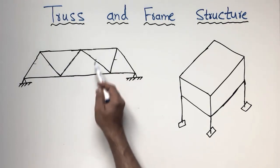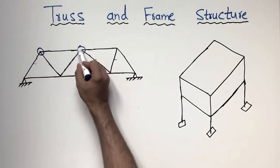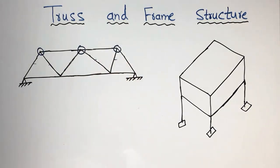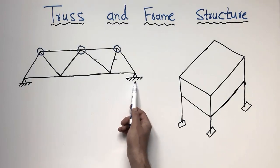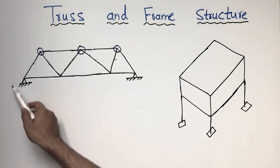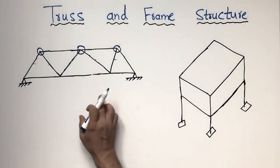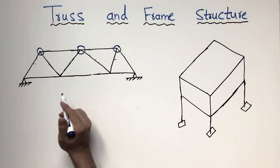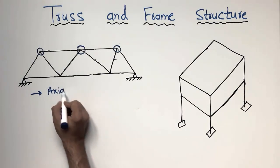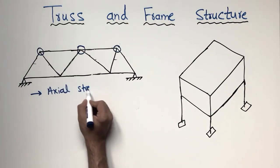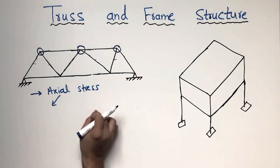These truss members are always connected to one another at the nodes. You can see here they are connected at the nodes. This truss is supported by a pin support at one end and a roller support at the other end. The truss structure is the type of structure which is only subjected to axial loads or axial stresses.